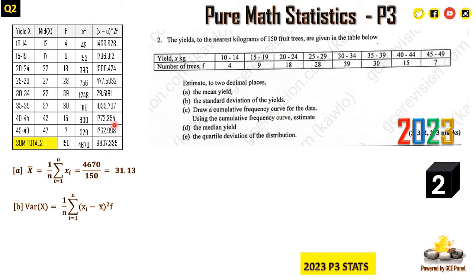When we sum all of these, we are going to have 9837.335, and we divide by the total frequency, which is 150. So that will give us 65.58223, but we have to give our answer to two decimal places. The final answer should be 65.58. Many students will end like this, but it's not okay. It has to be 65.58. From here, now we can get the standard deviation.